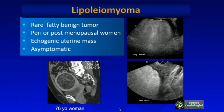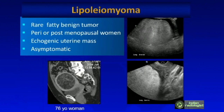There is also an unusual rare lesion: a lipoleiomyoma, a rare fatty benign tumor that typically affects peri- or postmenopausal women around ages 45 to 55. It appears as a very echogenic mass with areas of shadowing within the uterus — basically looks like a large cystic teratoma except it's in the uterus. CT confirms a predominantly fatty mass. This particular patient was 76 years old.